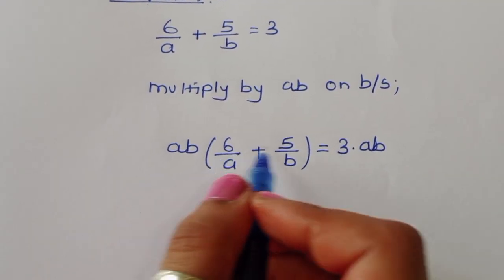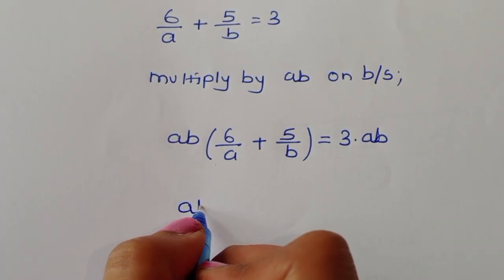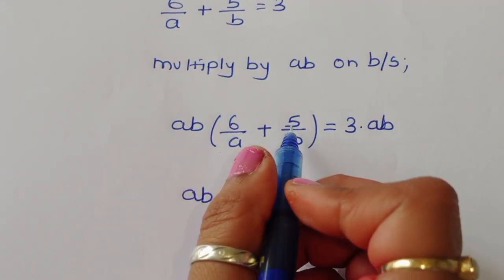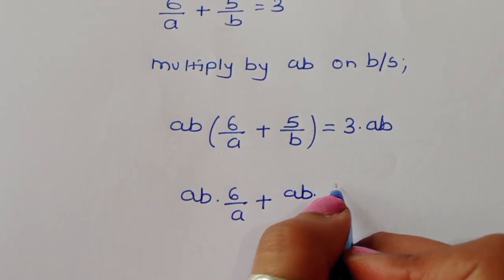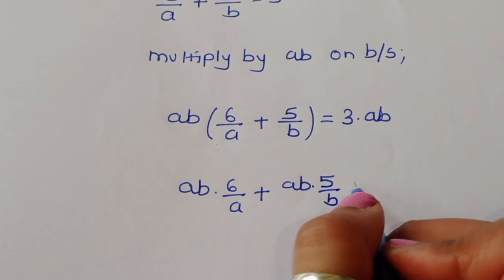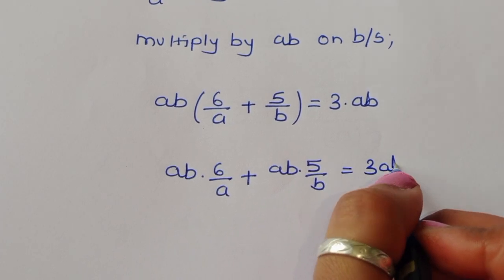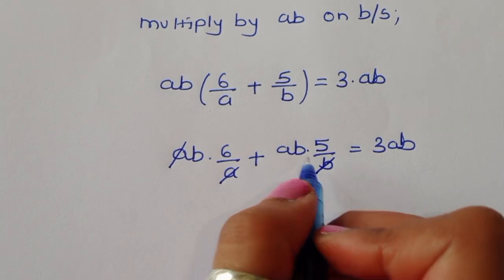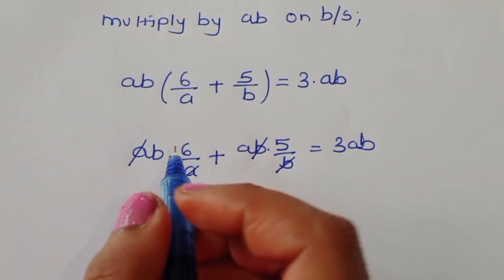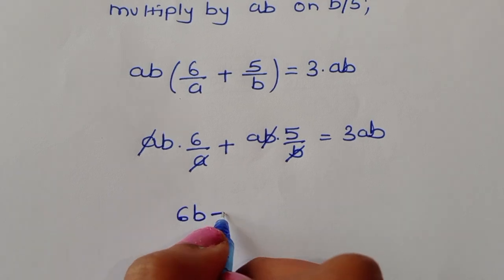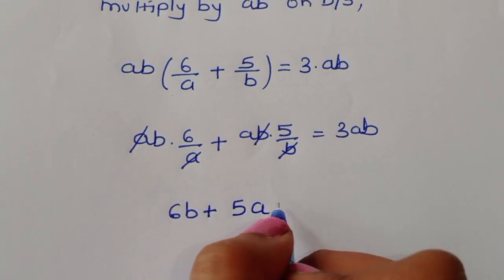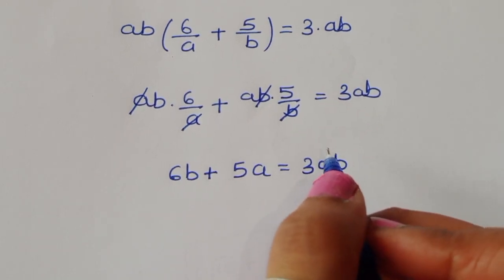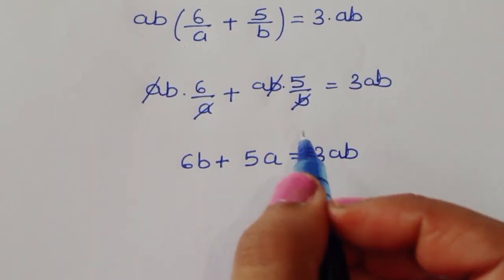When we distribute ab, we get ab × 6/a plus ab × 5/b equals 3ab. The a cancels in the first term and the b cancels in the second term, giving us 6b + 5a = 3ab.